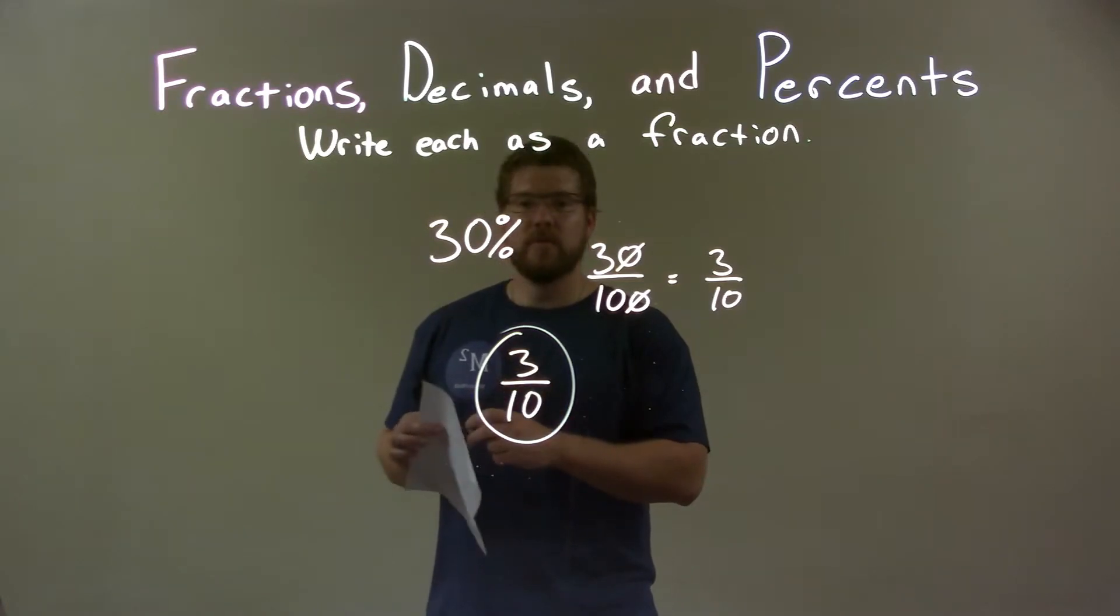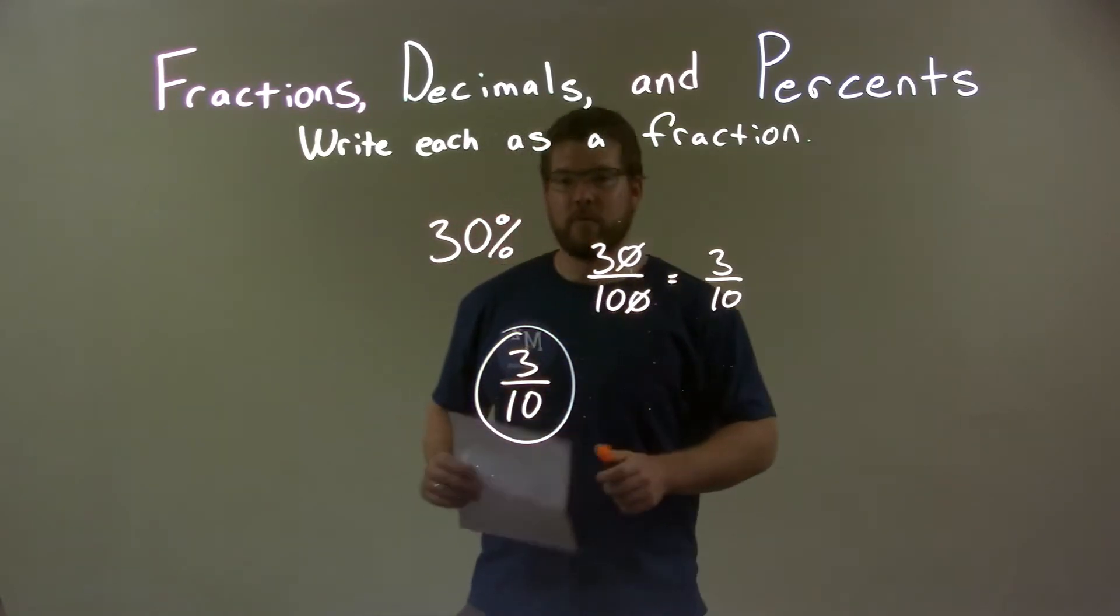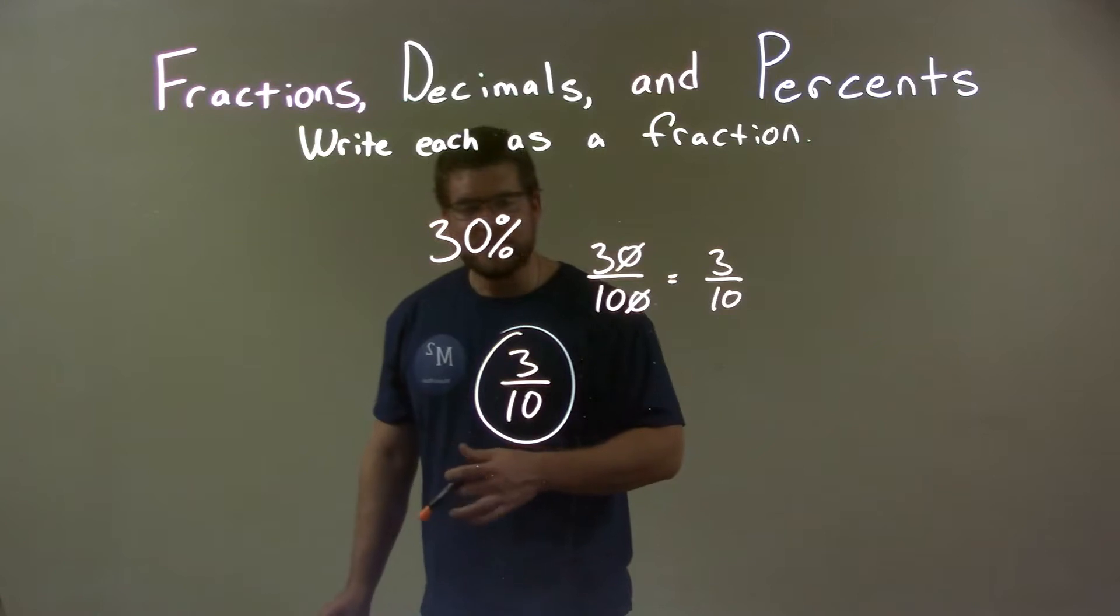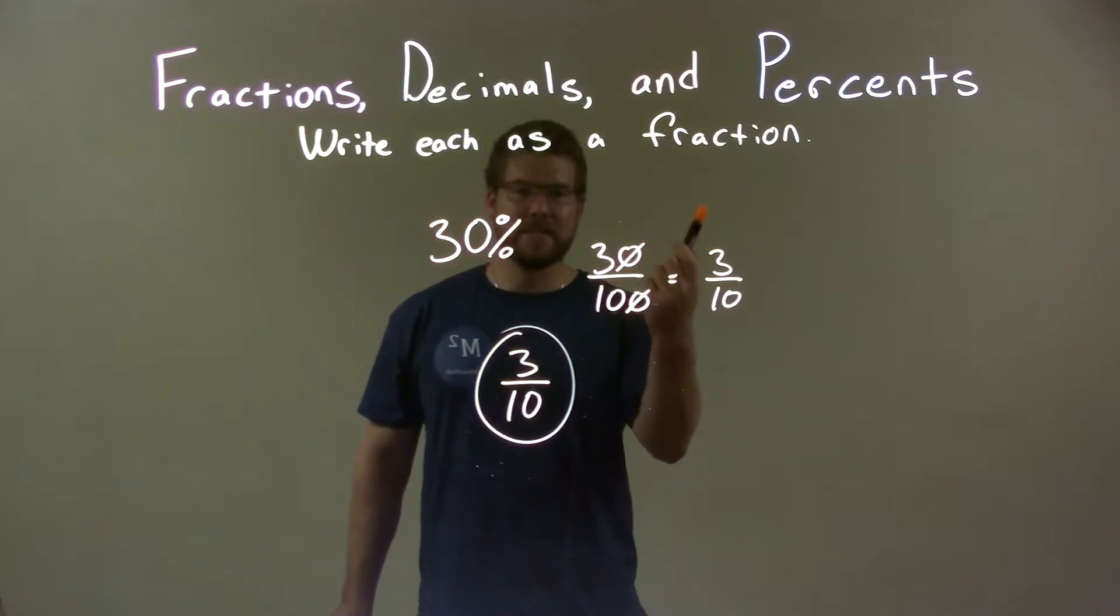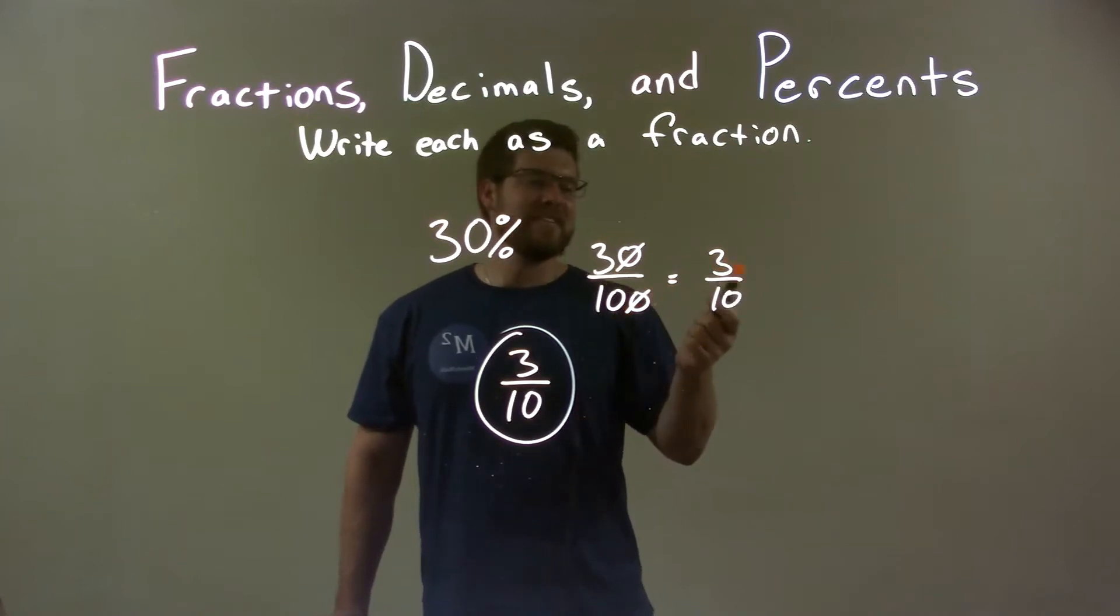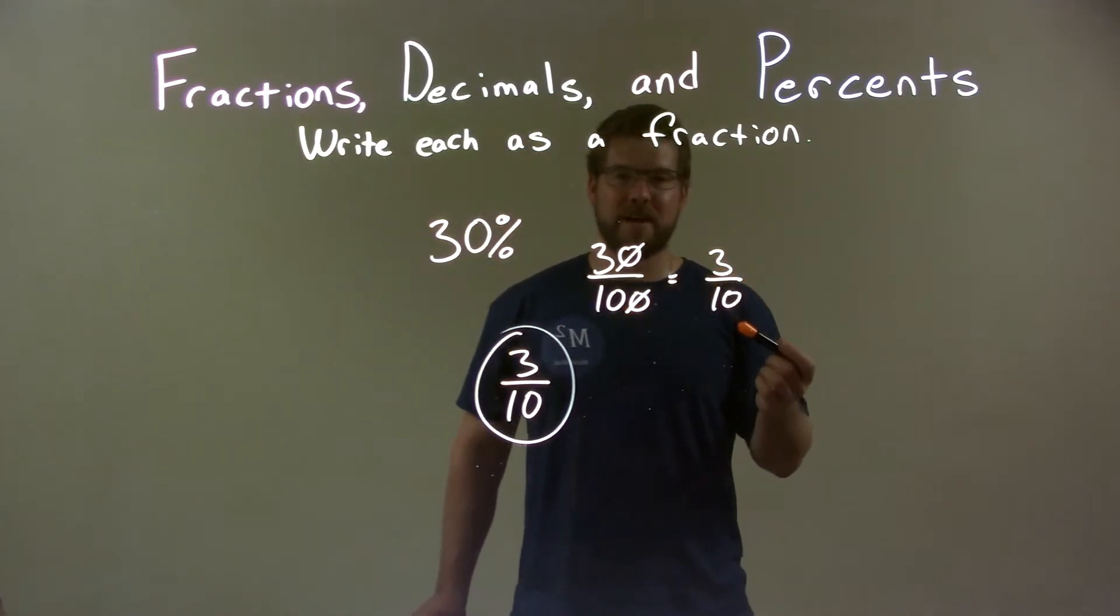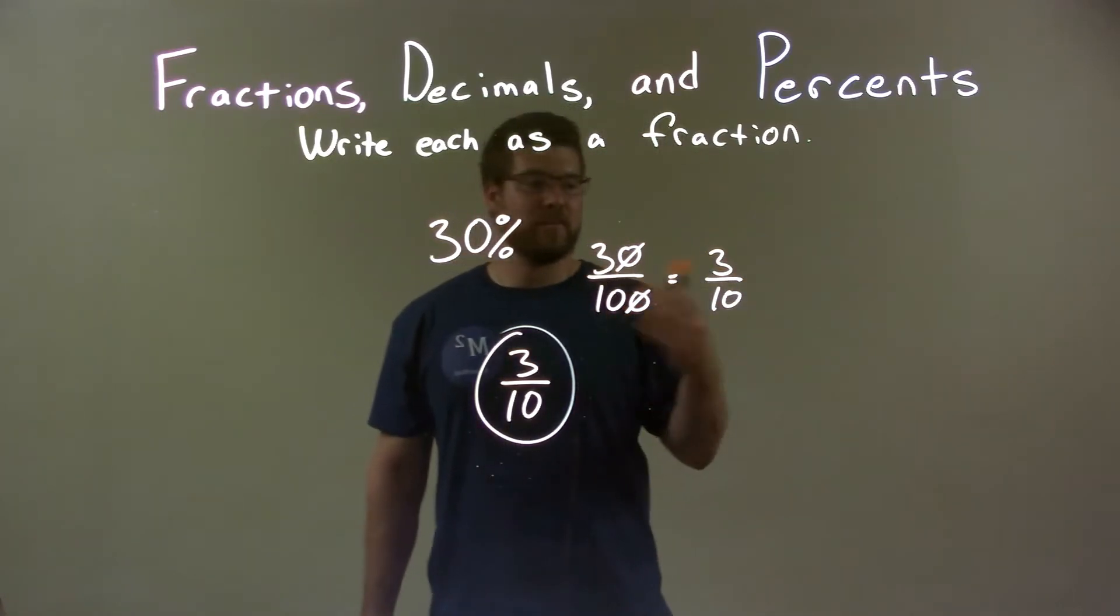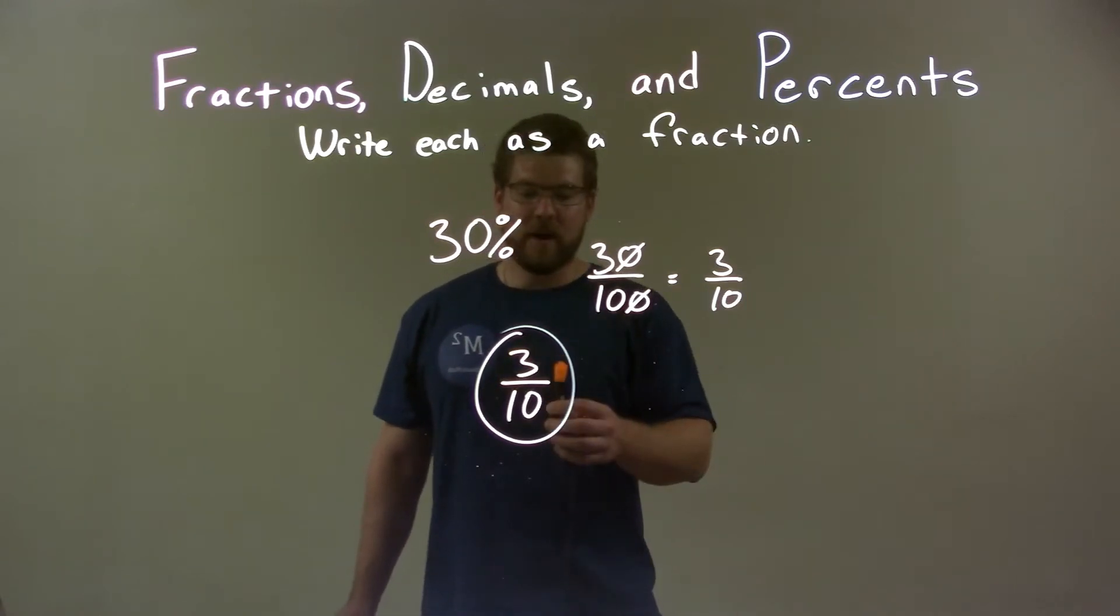So quick recap, we're given 30 percent and we have to write that as a fraction. When we do 30 percent, it's the same thing as 30 over 100. We simplify that fraction down to 3 over 10 and we were done. We couldn't break it down anymore. So again, our final answer is just 3 over 10.